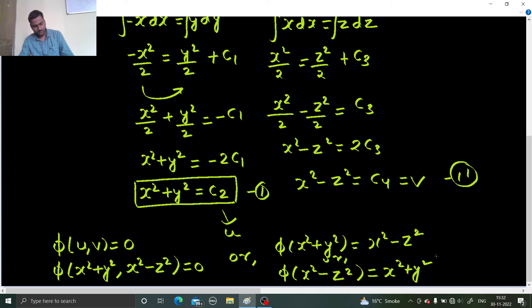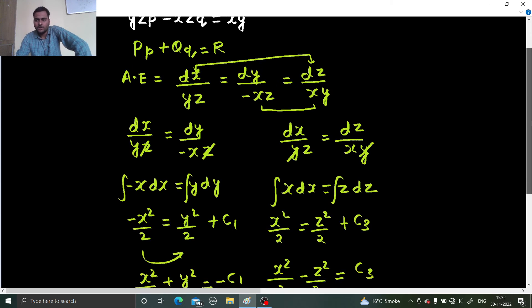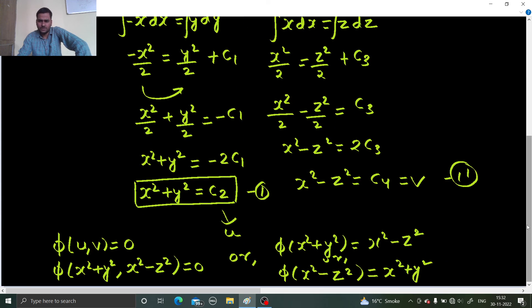Let's check. Do I have the same answer here also? x square plus y square and x square minus z square. If you take the other, definitely you would have taken the second and the third one. You would have gotten some other solution but it doesn't matter. Your process is required to be correct. Other things can be managed accordingly.